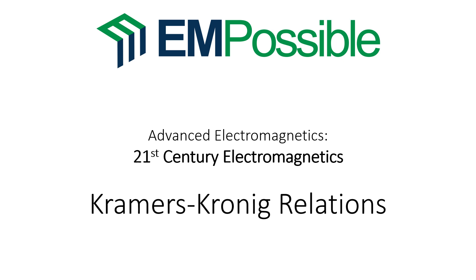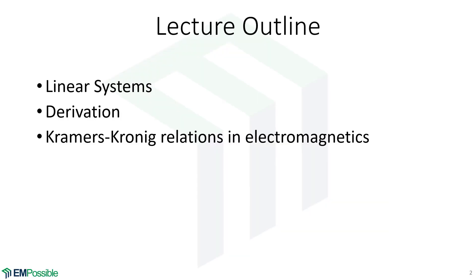The Kramers-Kronig relations. It turns out, if you're an electromagnetics person, it may surprise you that the Kramers-Kronig relations actually have nothing to do with electromagnetics. They come from linear system theory. But when we look at atomic scale resonances, this is a linear system, and we can apply the Kramers-Kronig relations to electromagnetics. So we'll start there, derive the Kramers-Kronig relations, then write them for electromagnetics, and finish by discussing why they're important in electromagnetics.